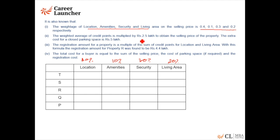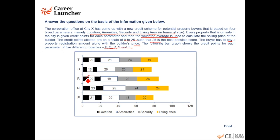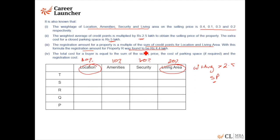The weighted average of credit points multiplied by 2.5 gives the selling price. Extra cost for parking space is 5 lakhs. The registration amount is a multiple of the sum of credit points from location and living area. For property R, location plus living area equals 44 points, and the registration is 4.4 lakhs, so 44 × x = 4,40,000, giving x = 10,000. So registration amount = (location + living area points) × 10,000.